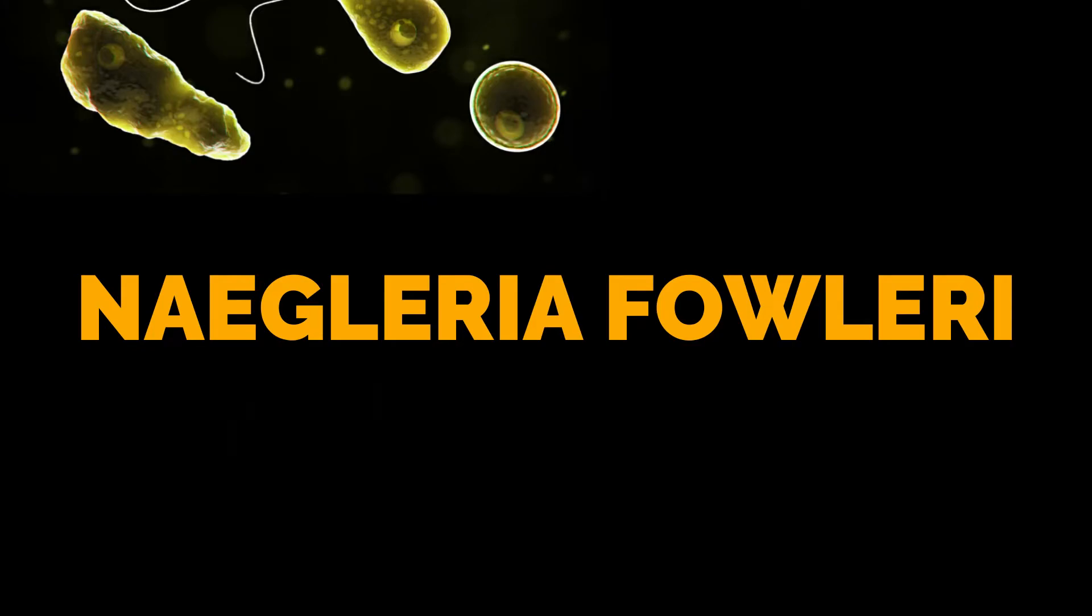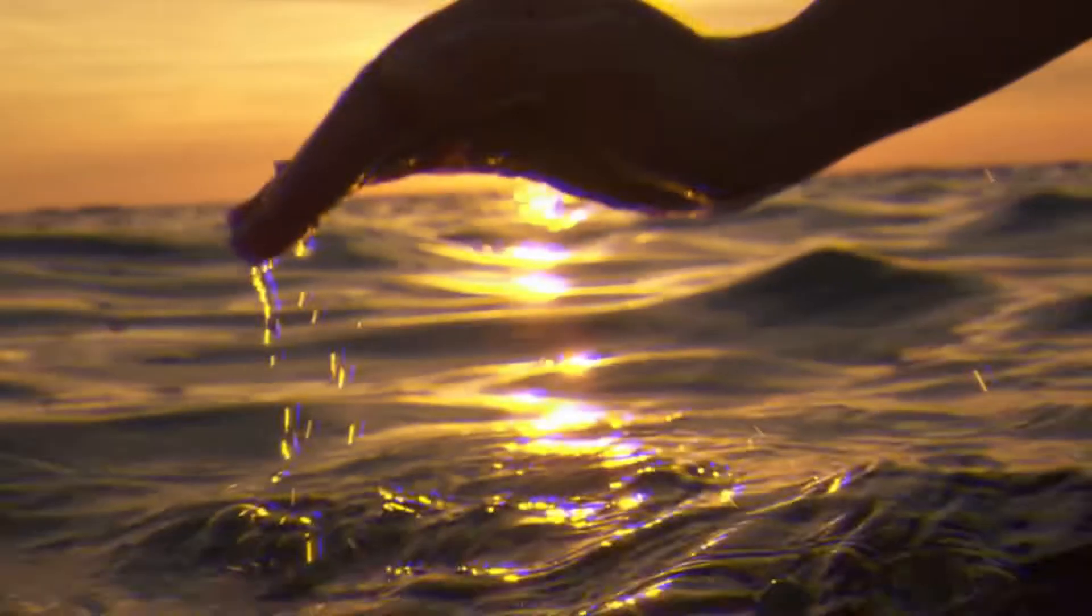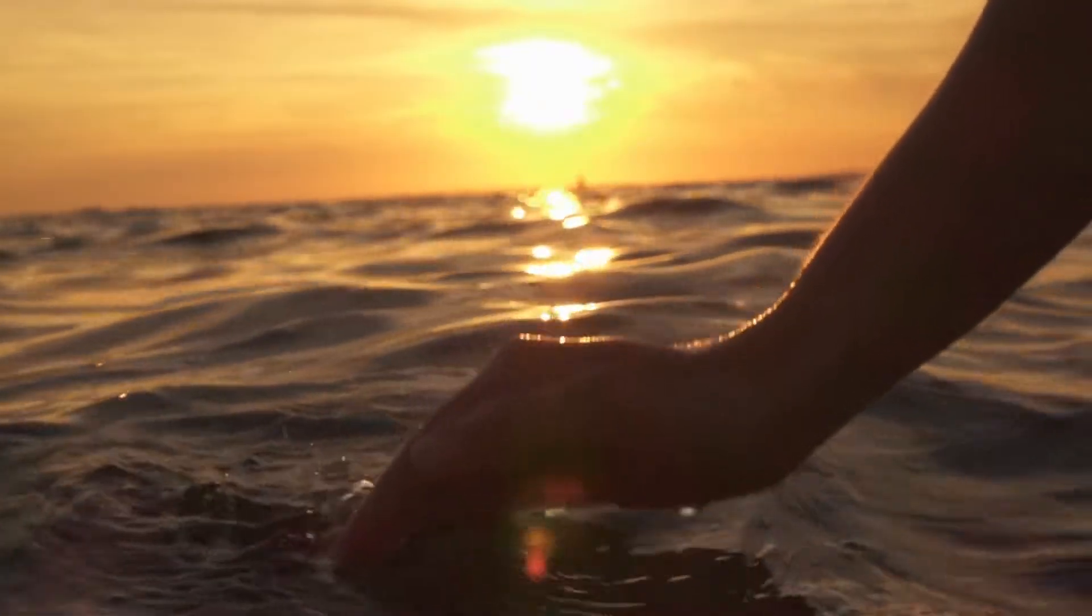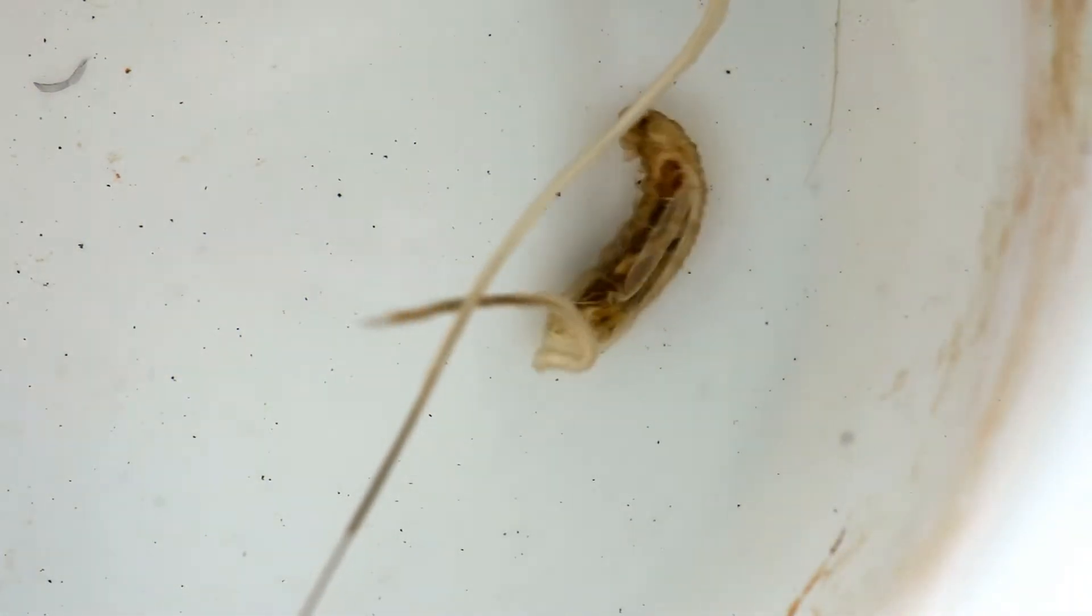Naegleria fowleri. Naegleria fowleri is a dangerous amoeba found in water which stays as a cyst until it forms into trophozoite upon meeting its host.